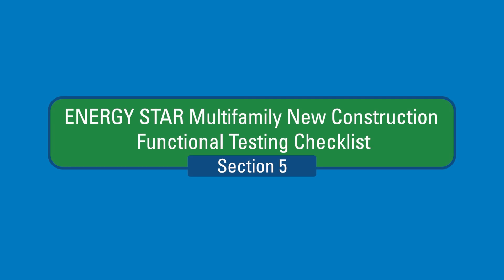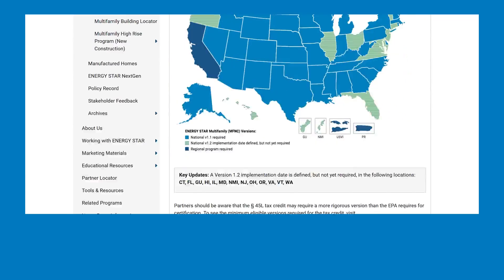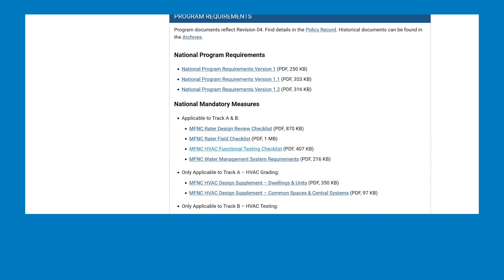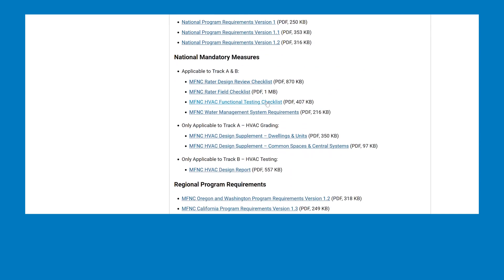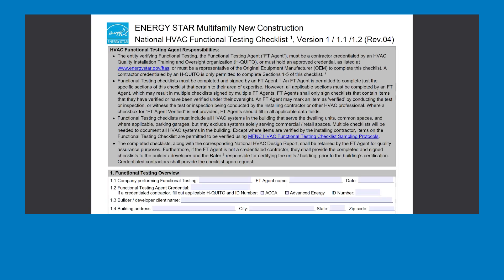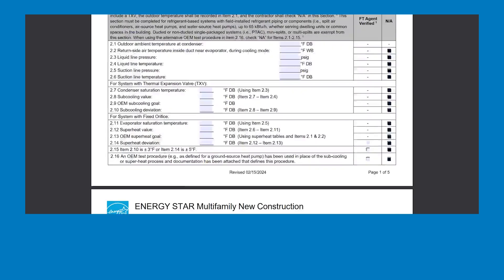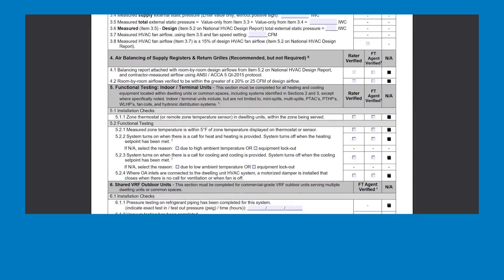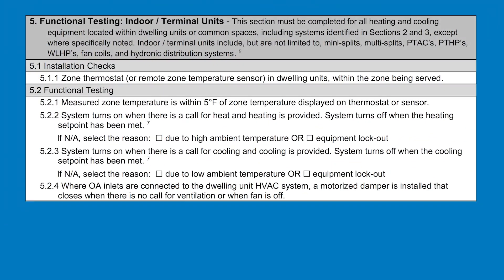In this video, we will review Section 5 of the ENERGY STAR Multifamily New Construction Functional Testing Checklist. We will be using revision 4 of this checklist, but please check the ENERGY STAR website for the latest applicable version. Section 5 covers the installation and functional testing of indoor or terminal units for heating and cooling equipment, and must be completed for all heating and cooling equipment located within dwelling units or common spaces.